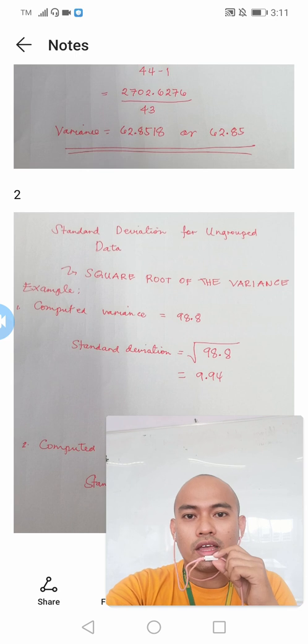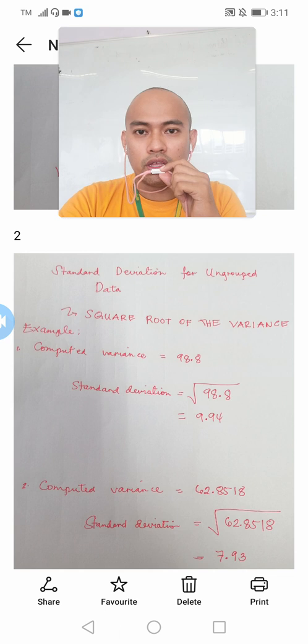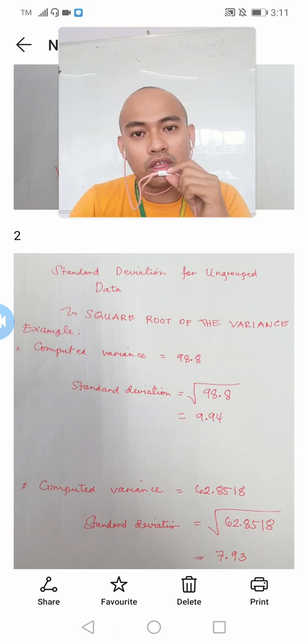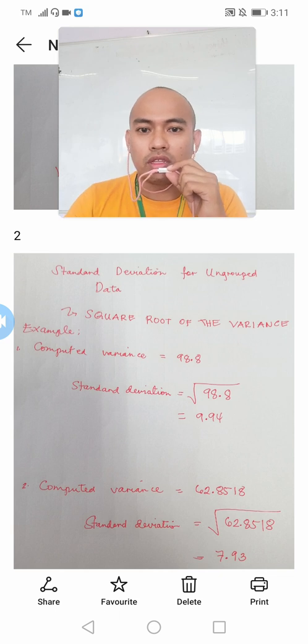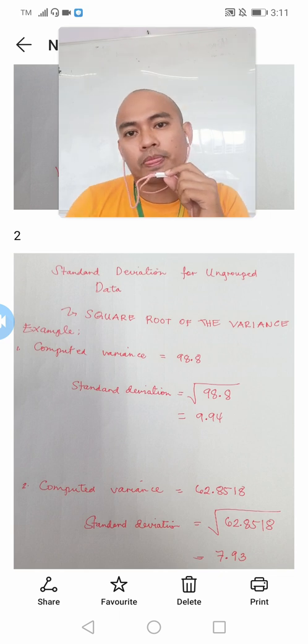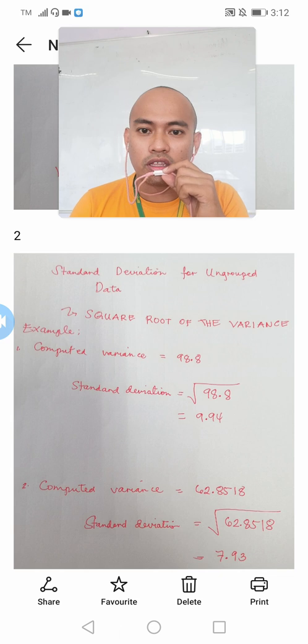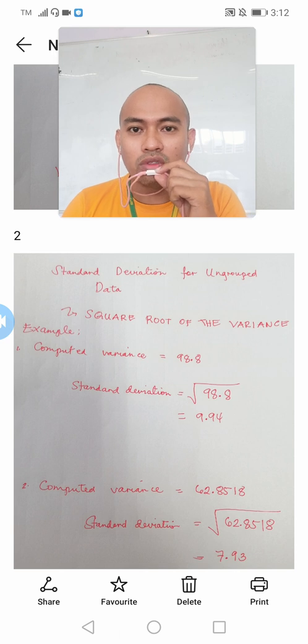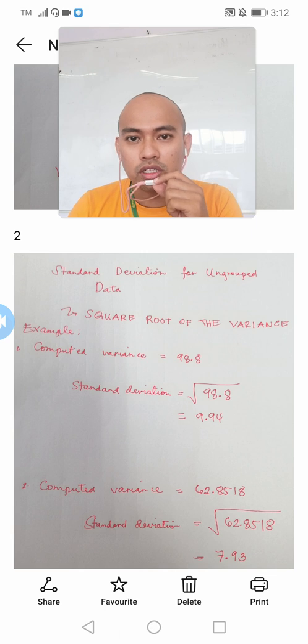For the standard deviation which is the last tool, it is now very easy to do. What you will do here is after finding the variance we just get the square root of that value of the variance. We can have now the value of our standard deviation. Let's say for example, a while back we have computed in our ungrouped data for the variance, we have computed a value of 98.8. That is the variance of that ungrouped data. So if we want to find out the standard deviation of this particular data set having a variance of 98.8, it is by simply getting the square root of this 98.8 and that will give you 9.94. And this 9.94 will now be the value of our standard deviation.